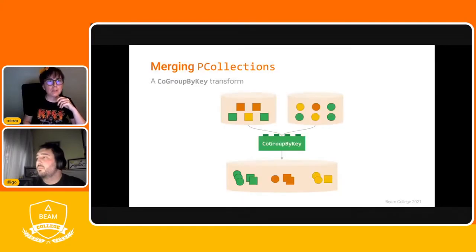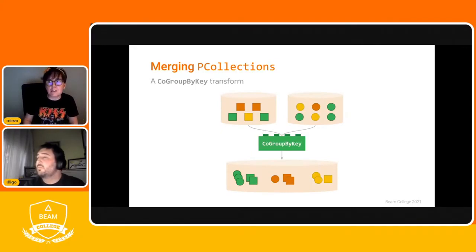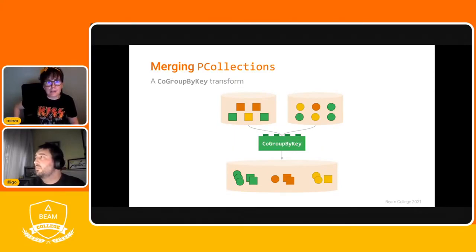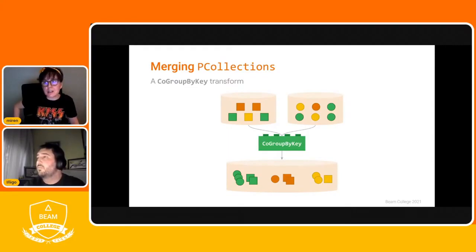In the diagram, we have two keyed P-collections where elements are color-shapes — the key is the color (green, orange, yellow) and the value is the shape type (square, circle, triangle). We do the CoGroupByKey transform to join both P-collections by the color of the elements into a single one. In the output, the key is still the color and the value is a list of the shapes that have that particular color.